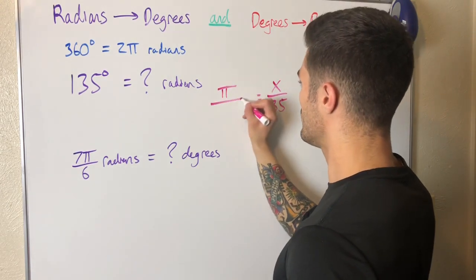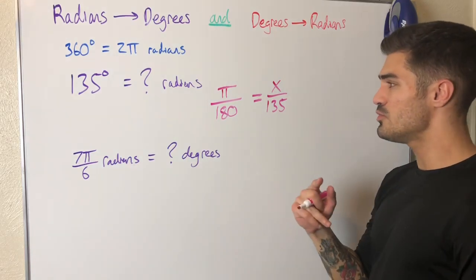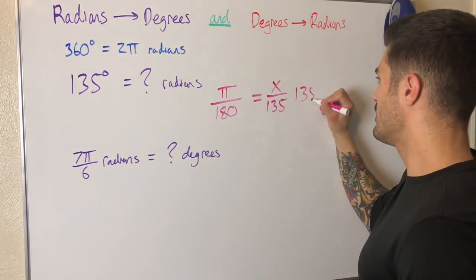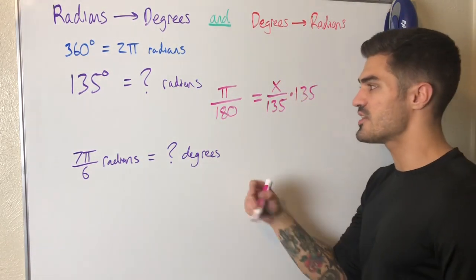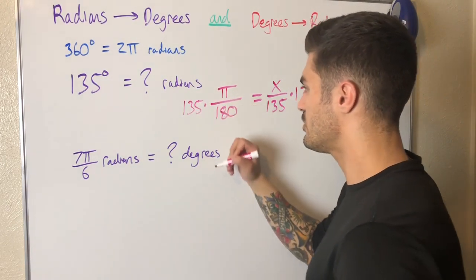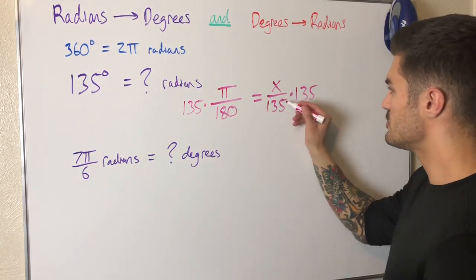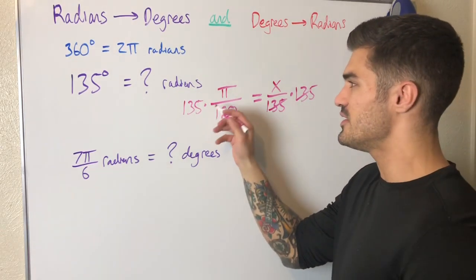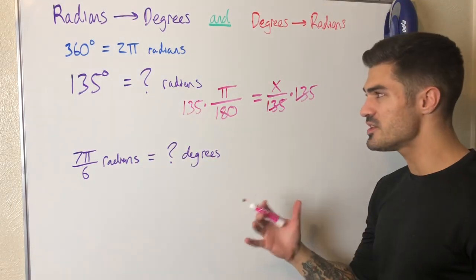I'll go ahead and erase because that's a little messy and we don't want our work to be messy. So what did I have? π over 180. Now I can continue. What will I do? Well, I can multiply 135 to both sides because that cancels this 135 and I'm left with just x on the right hand side, which is exactly what I want. On the left hand side I have 135 times π over 180.